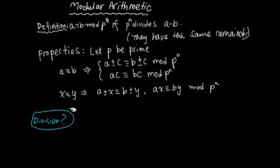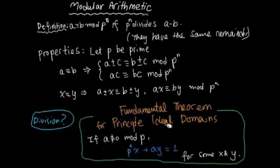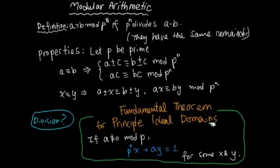To perform division-like operations on both sides of a congruence relation, we require a result. This theorem is a standard result appearing in probably all elementary number theory books, but they don't give it a name. For the purpose of this talk, I'm going to name it the fundamental theorem for principal ideal domains.